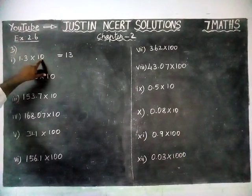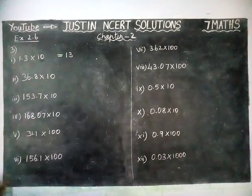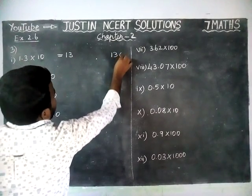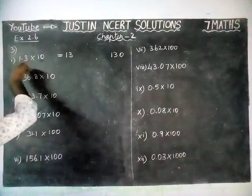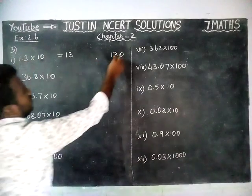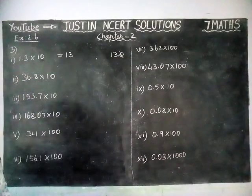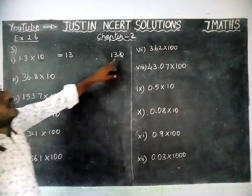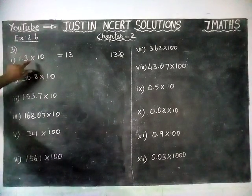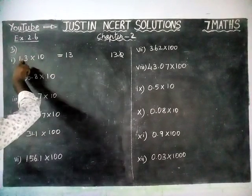Here, one zero is there, so we are going to move one step to the right side. For example, 1.3 into 10 — if we multiply directly, we get 13 into 10 equals 130. There is one decimal point, so 13.0 will come and the zero is cancelled. So instead of doing that directly, according to the number of zeros we move right side. Here we have only one decimal point, so we move one step right side.